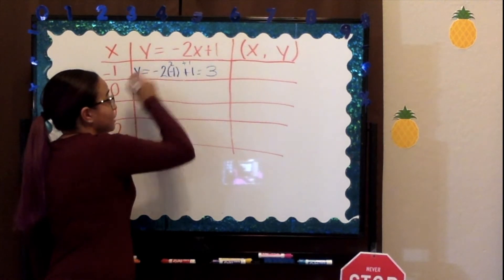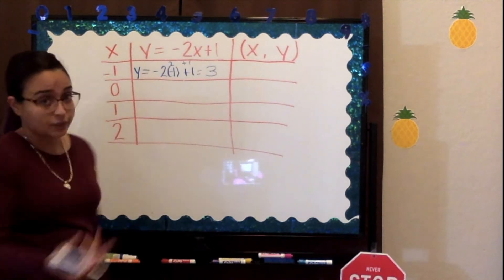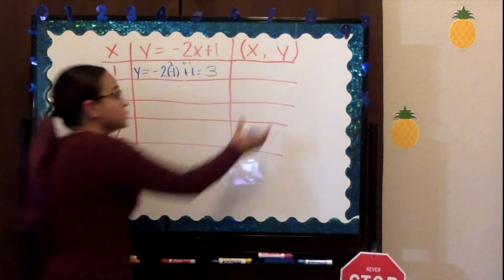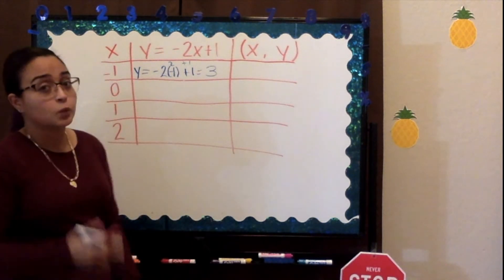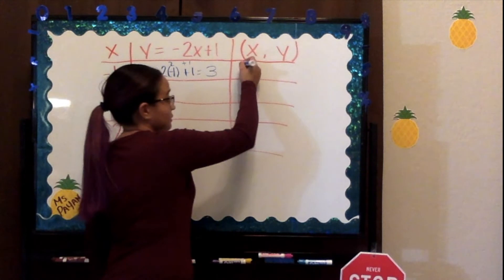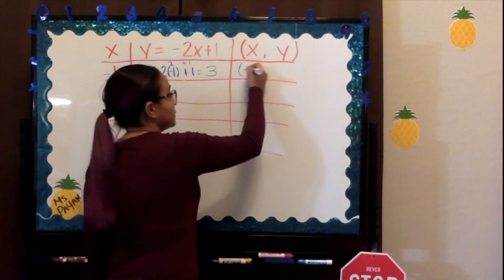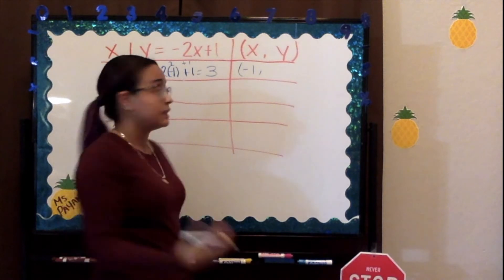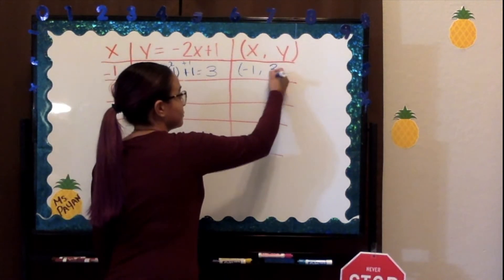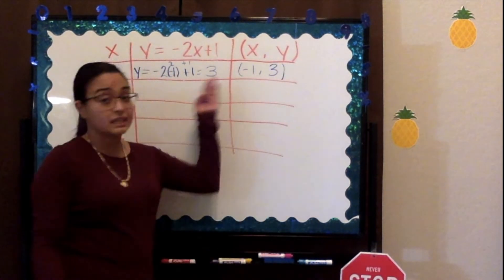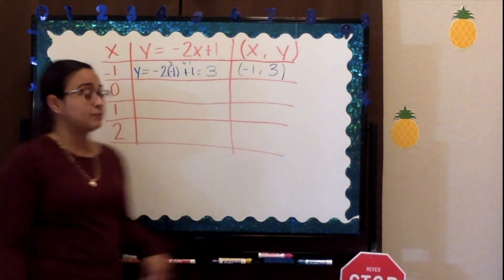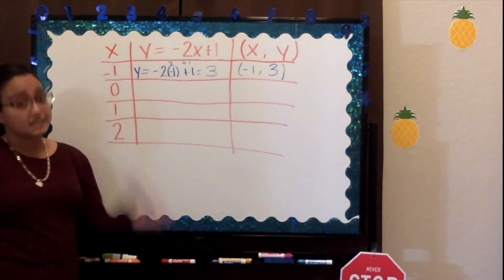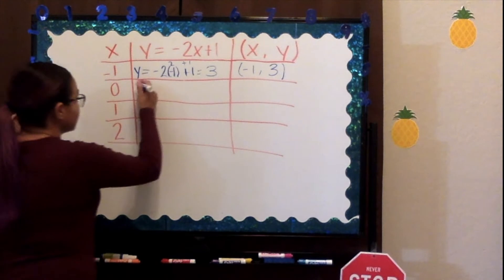That equals 3. So our value for y in this case is 3. Now, what do we do in this part of the graph? We know our value for x is negative 1, and we know that our value for y is 3. Let's go on with our next value for x, following the same step.